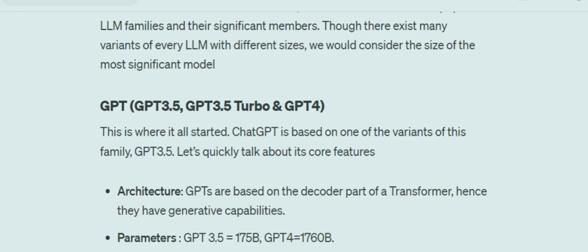Talking about the architecture, GPTs are based on the decoder part of a transformer. From the 2017 'Attention Is All You Need' paper, the transformer architecture has both an encoder and decoder part. The encoder part gave rise to BERT, and the decoder part is called GPT. ChatGPT is based on one of the variants of this GPT family, specifically GPT 3.5.